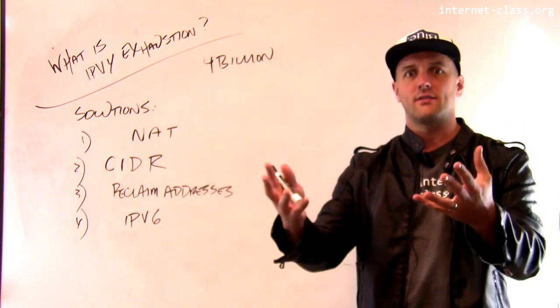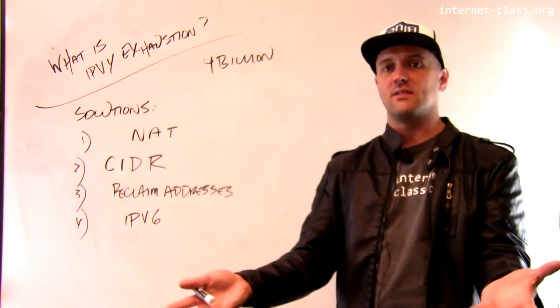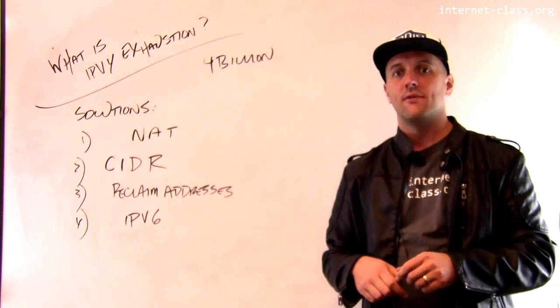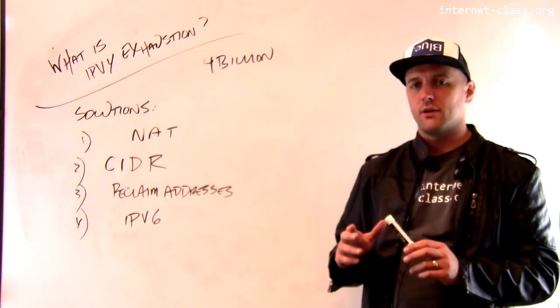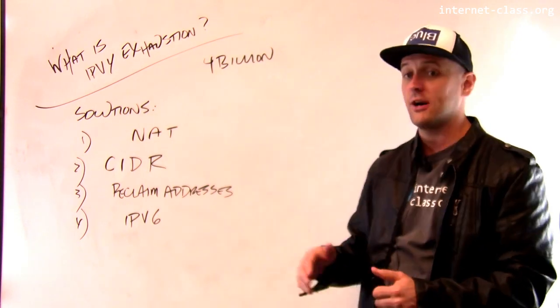But remember how we allocated IP addresses. We allocated them in these big blocks originally. We gave certain organizations 16 million IP addresses and said, hey, here, go have fun. And that turned out to be not a fantastic idea. So there's this issue of how do we use these IP addresses.